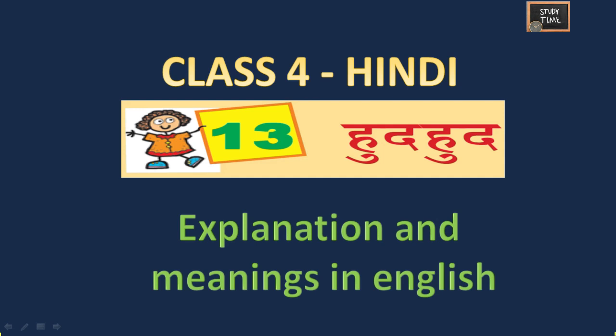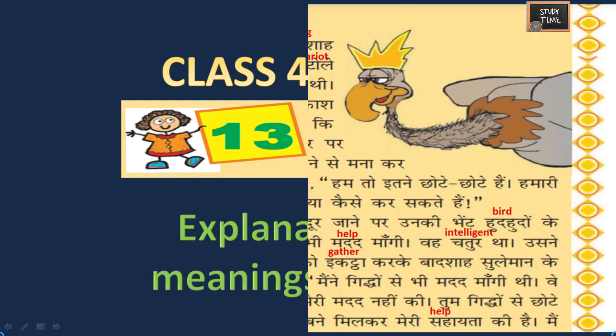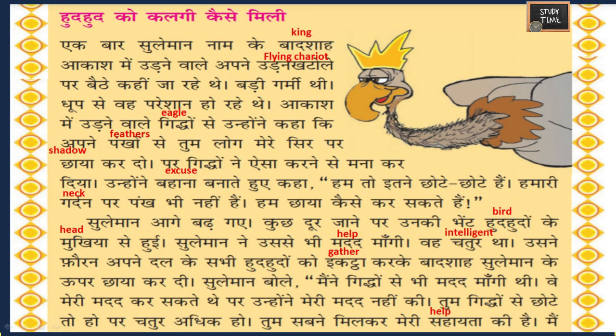Hello everyone, welcome to Study Time. In this video we are going to see Class 4 Hindi Chapter 13 'Hudhud' - explanation and meanings in English. 'Hudhud ko kalgi kaise mili' - in this chapter we are going to see about Hudhud, a bird, and a story about this bird. Kalgi means crest, so how did the Hudhud get the crest?